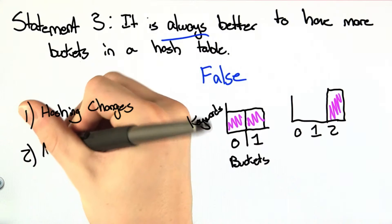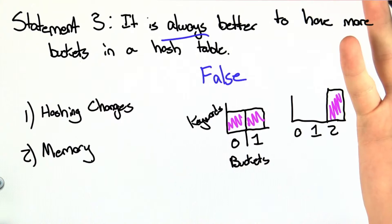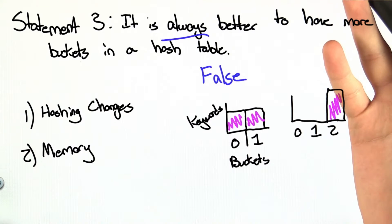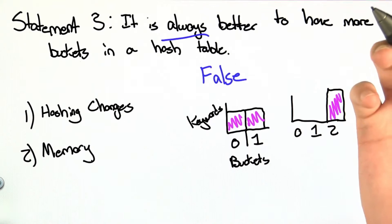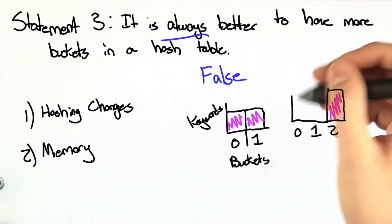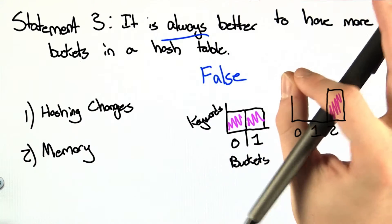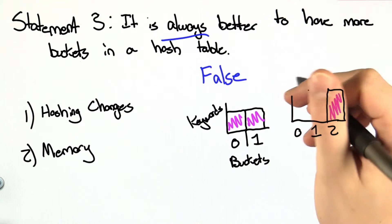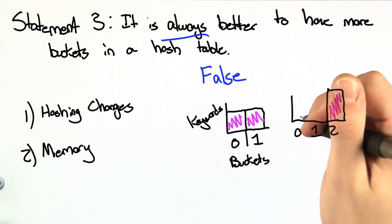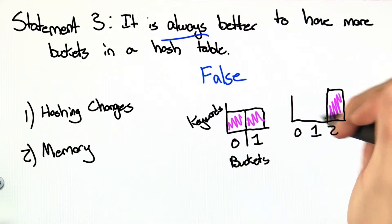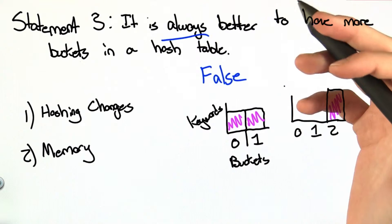And the second reason is memory. I could have an arbitrarily long hash table, but they can use a lot of space, especially if there are a few keywords that go into it. Real-world implementations of hash tables try to shoot for a ratio between the number of buckets they have and the number of keywords, increasing the number of buckets accordingly as the number of keywords in the hash table decrease and increase.